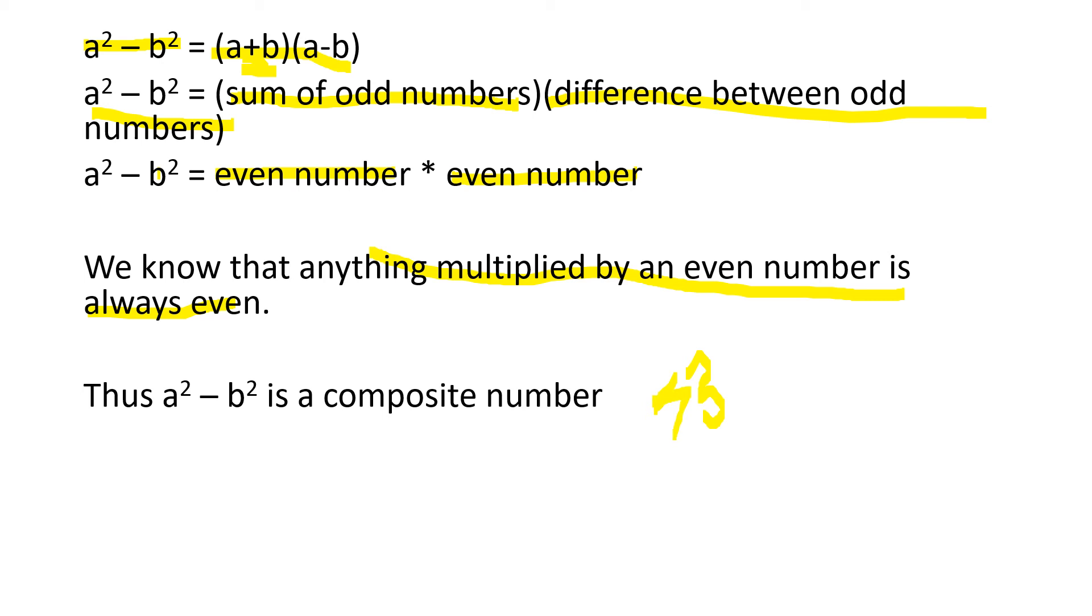If they were greater than 3, then 2 is the number that cannot come over here, and 2 is the only even prime number. So, we can say that A squared minus B squared is an even number, therefore it is a composite number.